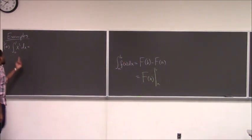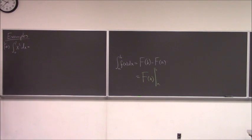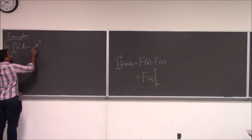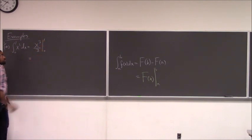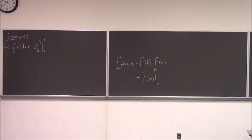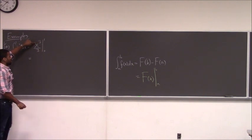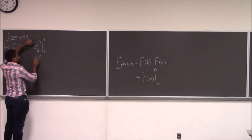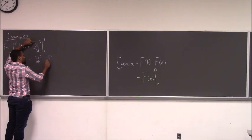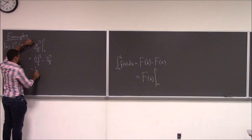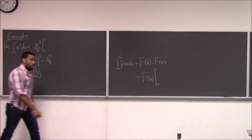What would be the anti-derivative of x squared? X to the third over three. So you write x to the third over three with the bar, from zero to one. You take the top number — that's B — plug it into the function, minus the bottom number. You get one-third, which is what we got when we computed it the long way.